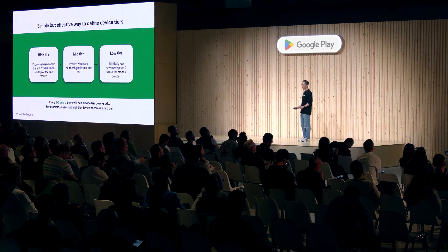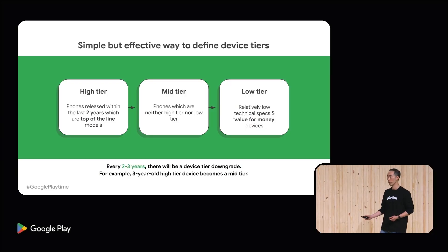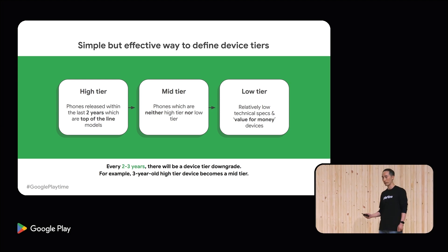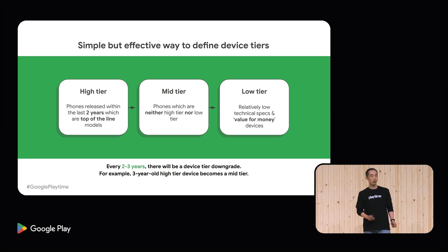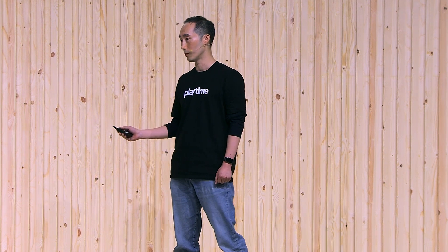Before I go into the five myths, let me explain the concept of device tiering: high, mid, and low. This might be a bit dry, but this is a fundamental baseline if you want to understand your new business opportunities. I use the 3-tier model, which is the simplest but effective. High tier devices are the phones released within the two years and are the top-of-the-line models. Low tier models are the relatively low technical specs and value-for-money devices. The rest are the mid-tier devices. Every two, three years, there will be a device tier downgrade — for example, Pixel 9 Pro is a high tier right now, but after two, three years, it will become a mid-tier.